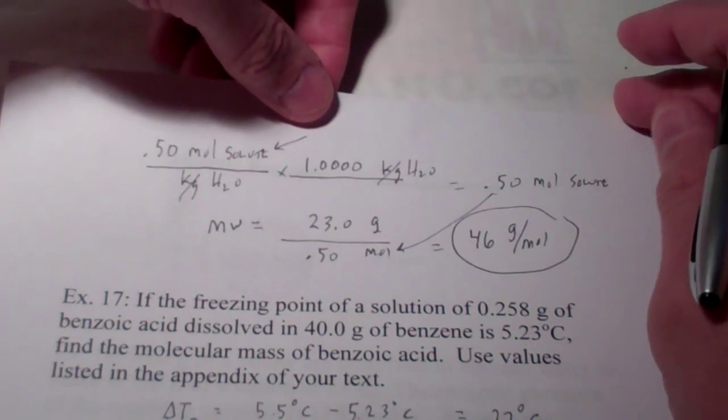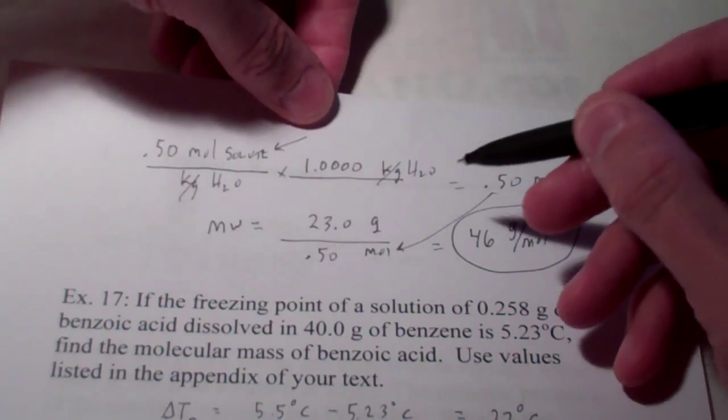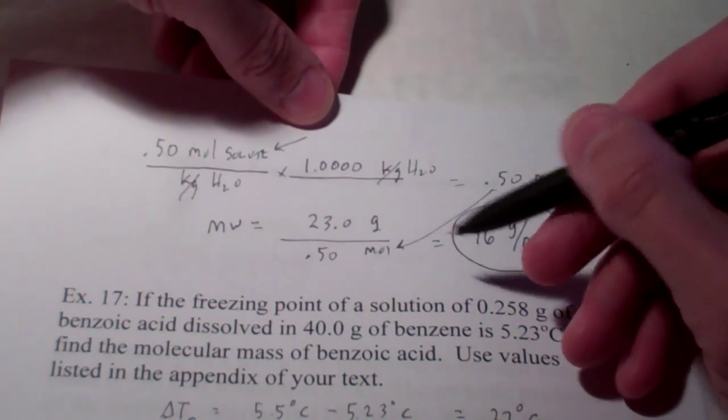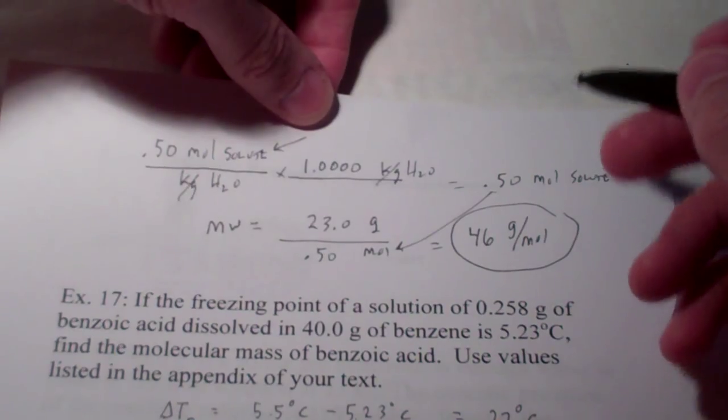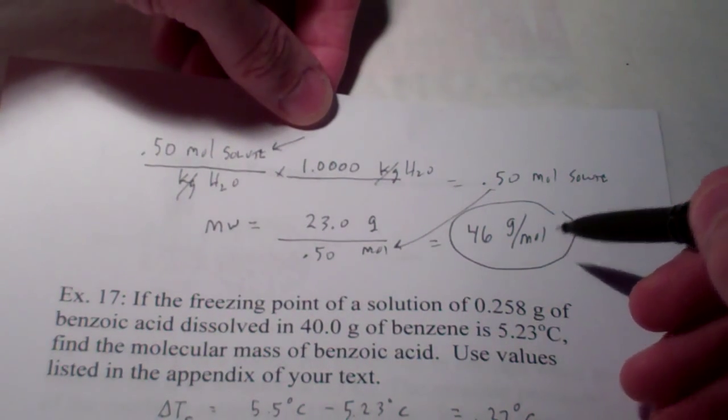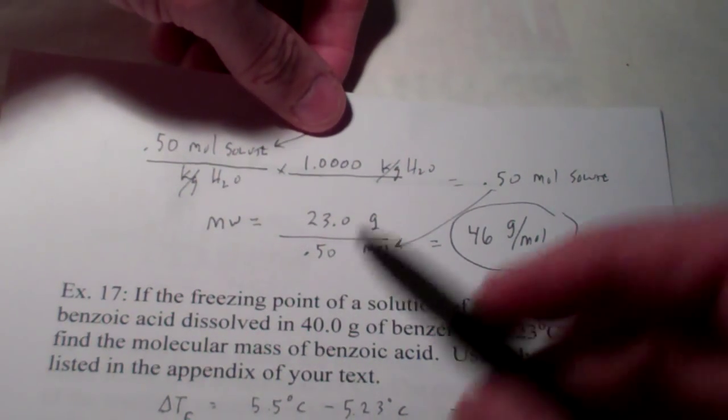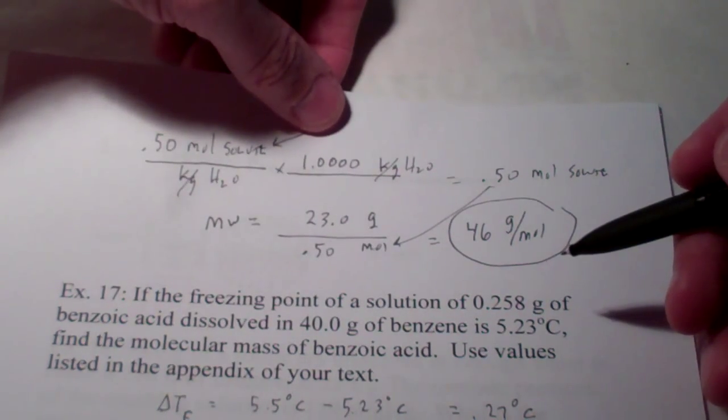We also learned how to calculate the molecular weight of something based upon how much it depressed the freezing point of a solvent. And that was the problem we just wrapped up, example number 16. Now I want to do example 17 which uses a solvent other than water.